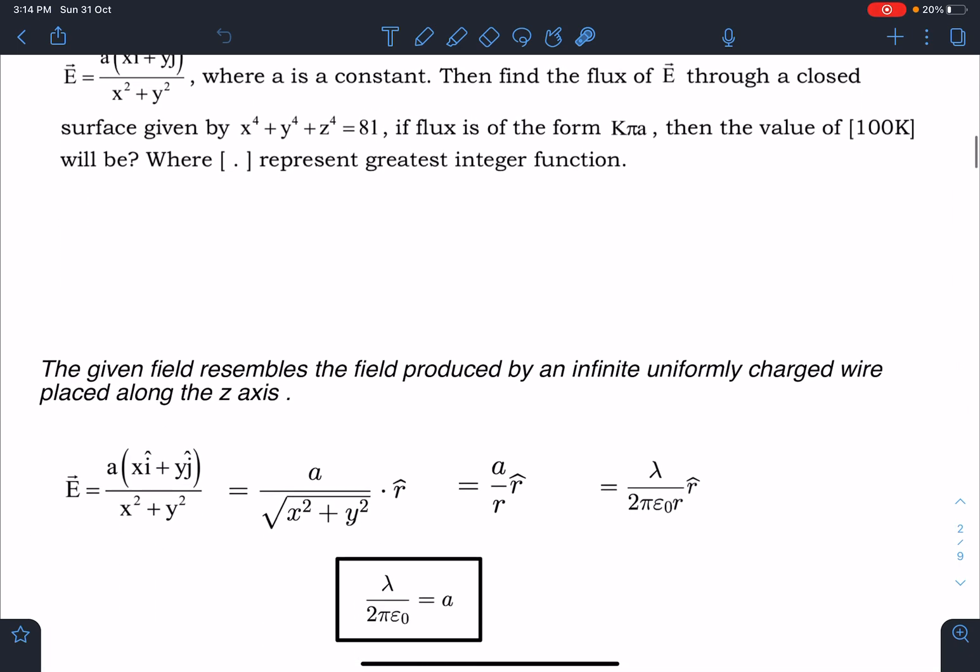First thing which we are going to notice here is the given field resembles the field produced by an infinite uniformly charged wire placed along z axis. So this vector I can convert into r cap kind of thing. So a times a by root of x square plus y square and r cap is xi plus yj divided by root of x square plus y square. This will become r cap and further this value becomes r, so it will become like a by r times r cap.